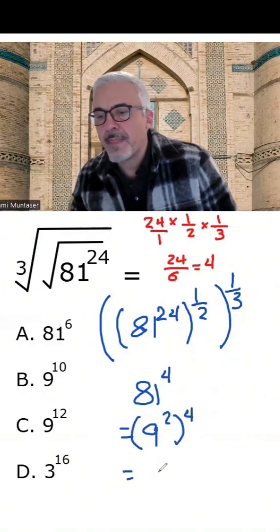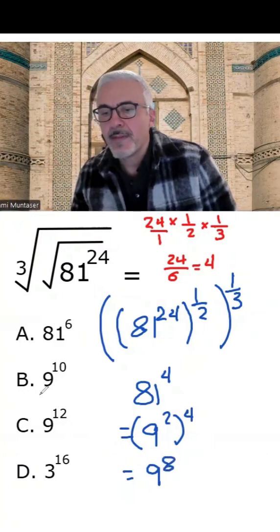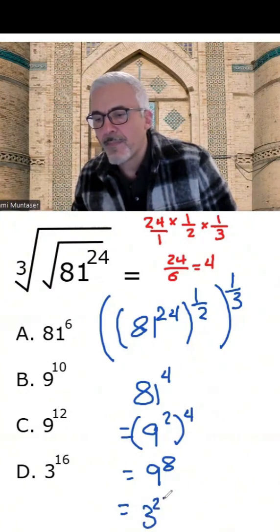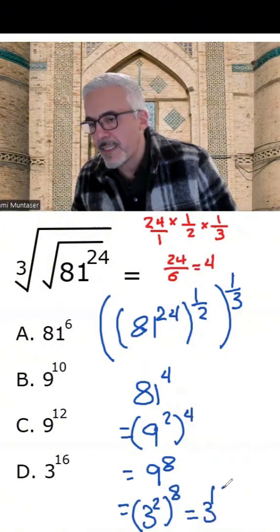And that's going to give me 9 to the power of 8. And that's not an option either. So one more. We could change the 9 to 3 squared to the power of 8. And that gives me 3 to the power of 16.